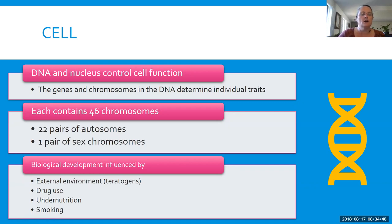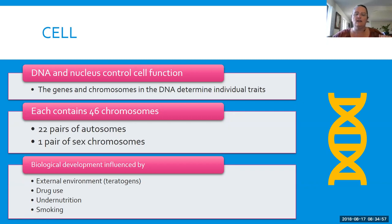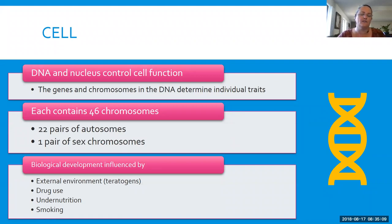In the human body, we have 46 chromosomes, which is 22 pairs. We get 22 from our mother and 22 from our father. And then that last set is the one that decides whether we're male or female. We either get an X or a Y from our father — we always get an X from our mother. So XX makes a female, XY makes a male.